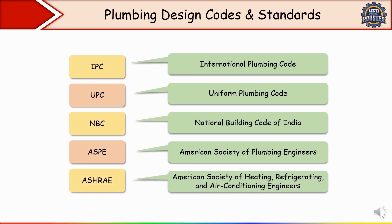Next we have ASHRAE — American Society of Heating, Refrigeration and Air Conditioning Engineers. This standard is published by ASHRAE and is used globally in commercial buildings. Their main purpose is to provide design recommendations for energy-efficient water heating and plumbing systems. Key ASHRAE guidelines include ASHRAE 90.1 for energy-efficient hot water systems, ASHRAE 189.1 for sustainable water use in green buildings, and the ASHRAE Handbook for HVAC Applications, which covers plumbing design for cooling towers and condensate drainage.